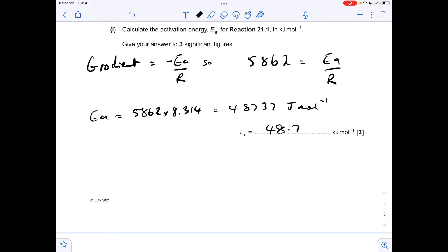So I need to divide by 1,000 and give it to three significant figures. So my answer would need to be 48.7 kilojoules per mole. Now there's a bit of leeway with the gradient in the mark scheme, so you're allowed to go between minus 5,700 up to minus 6,100, which means that the activation energy range goes from 47.3 up to 50.7.